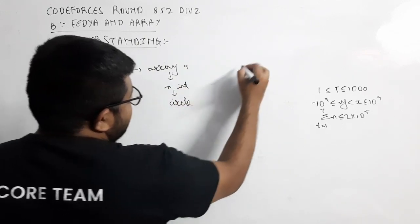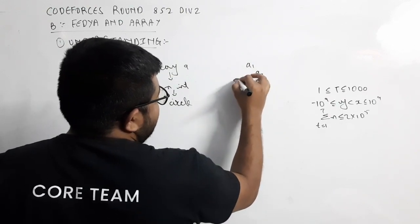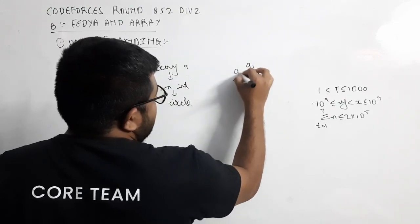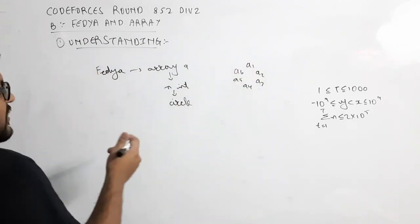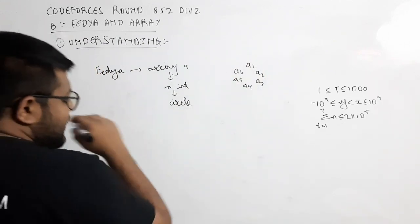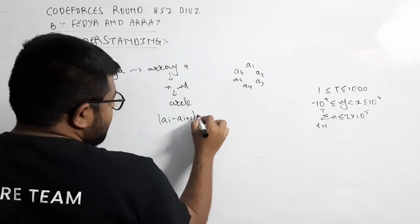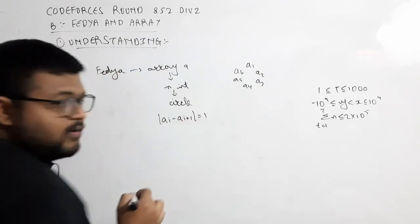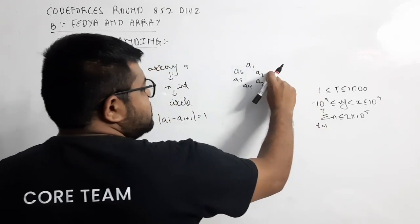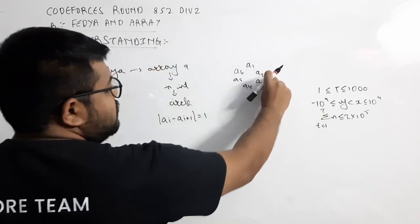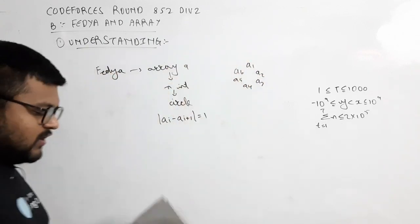The circle is arranged as a1, a2, a3, a4, a5, a6 — so we have this visualized. The absolute difference between two consecutive numbers is 1, meaning for this pair, this pair, this pair, and even for a6 and a1.